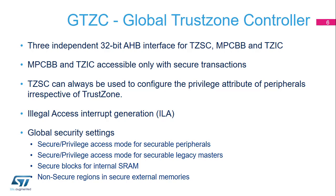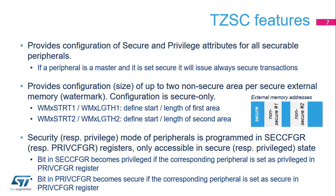The GTZ-C is a TrustZone Aware peripheral. The MPC-BB and TZ-IC are accessible only with secure transactions, but the TZ-SC can be used by non-secure firmware to set the privileged attribute of non-secure peripherals. Any attempt to access a secure resource while running in non-secure state can cause an illegal access interrupt generation. The TZ-SC is in charge of setting the secure and privileged attributes to securable peripherals and securable masters that are not TrustZone Aware. The TZ-SC is also in charge of setting the secure attribute to external memories, and the MPC-BB sets the secure attribute to internal SRAM blocks.